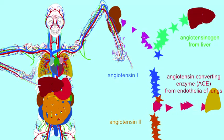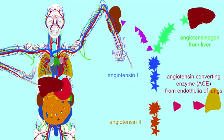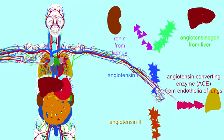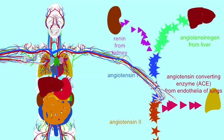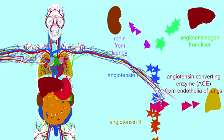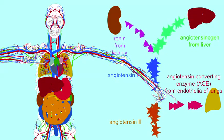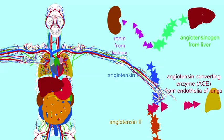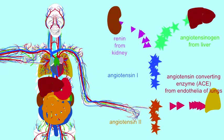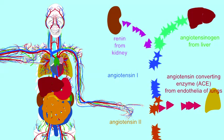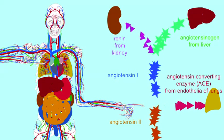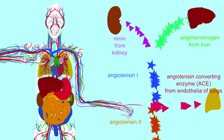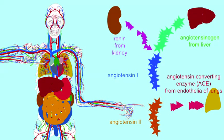Angiotensin 1 then circulates through the blood where it encounters an enzyme known as the angiotensin converting enzyme, or ACE. This is made by the endothelial cells throughout the body, particularly in the lungs. ACE converts angiotensin 1 into angiotensin 2, which is a hormone that causes a number of responses to increase blood volume.